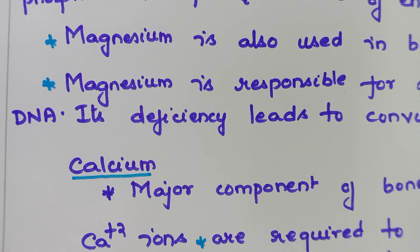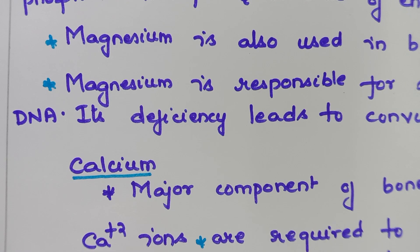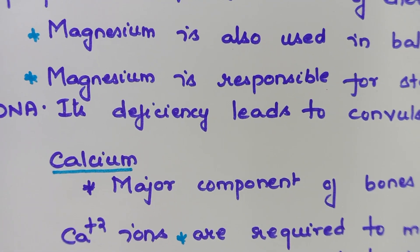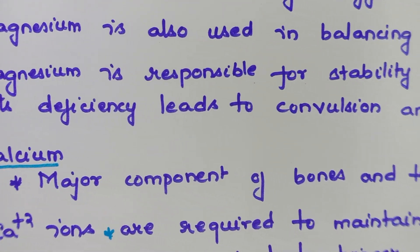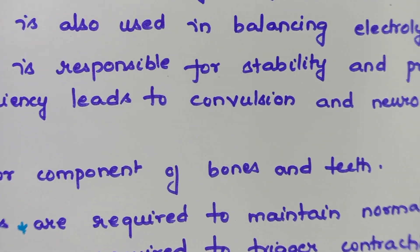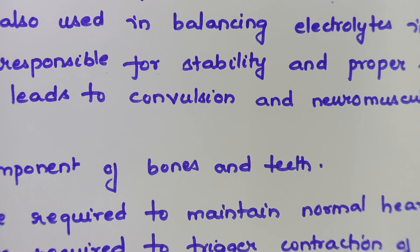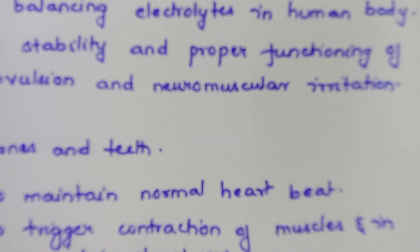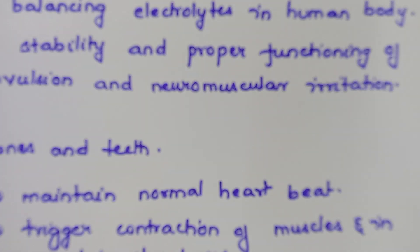If magnesium is deficient, its deficiency leads to convulsion and neuromuscular irritation.